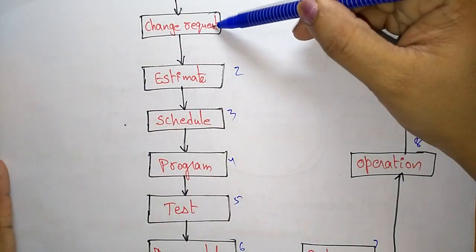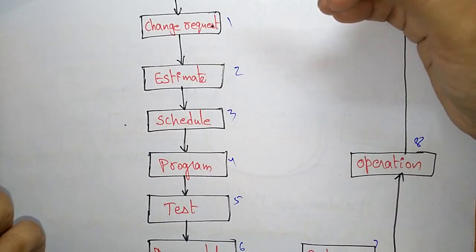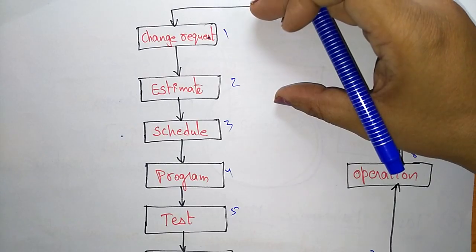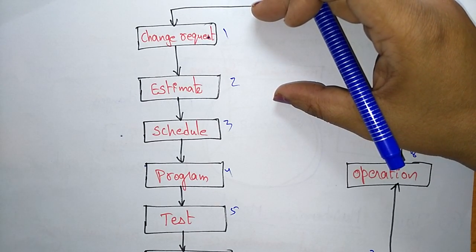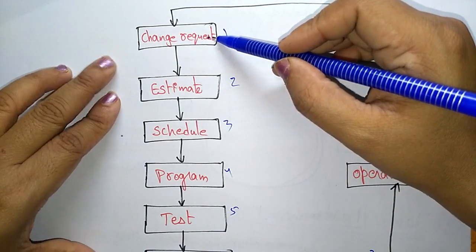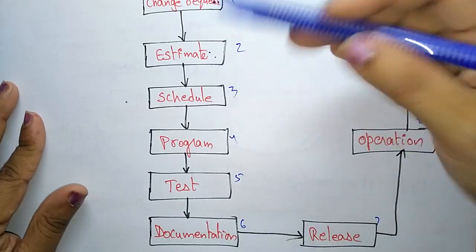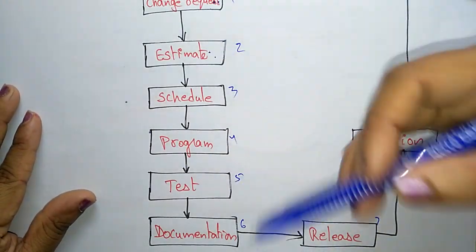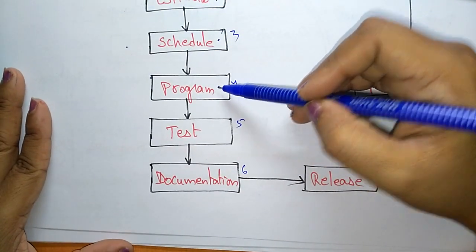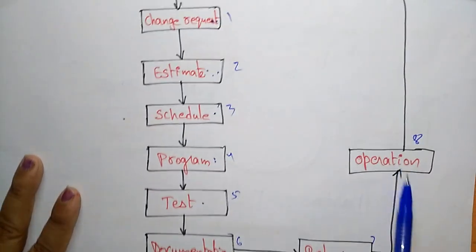Phase one is the change request — maintenance starts with the change request because the change has to be done on the already delivered, existing system. First, start with the change request; then estimate how long it takes and what the cost will be; then schedule; then program implementation; after implementation, test; then final documentation; then release and execute for operation.